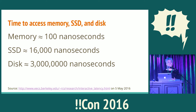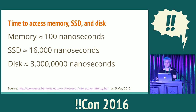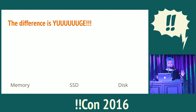The next thing you need to know to understand Unix A-Time is that there's a huge difference between memory, SSD, and disk access times. Memory is about 100 nanoseconds to access, SSD is about 16,000 nanoseconds, and disk is about 3 million nanoseconds.